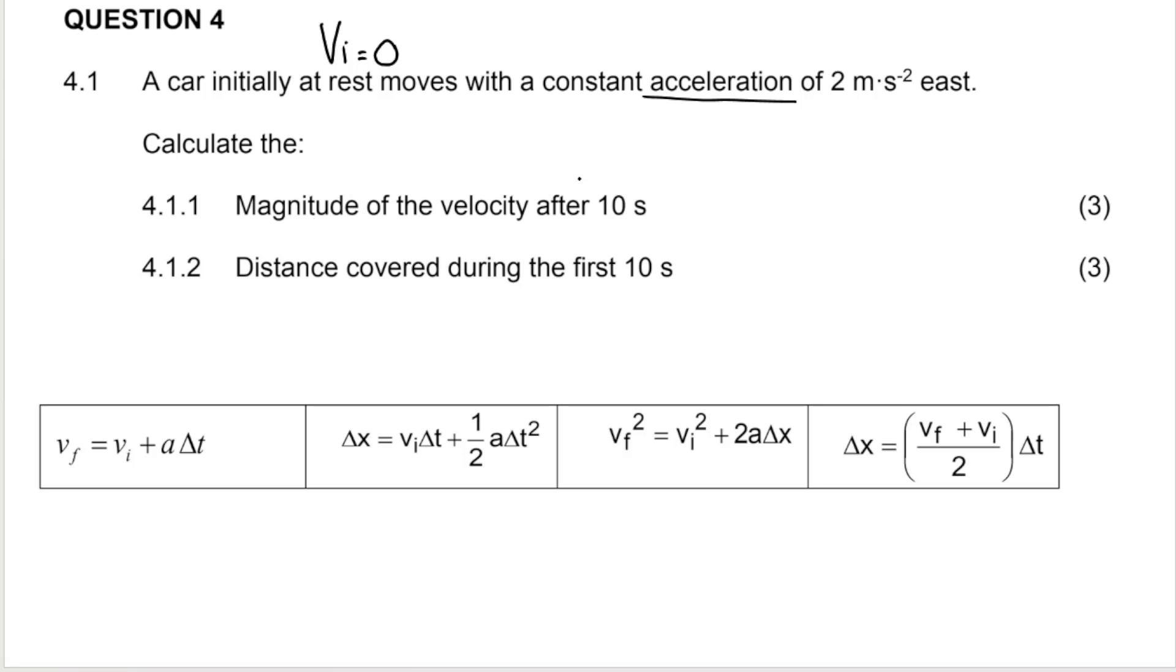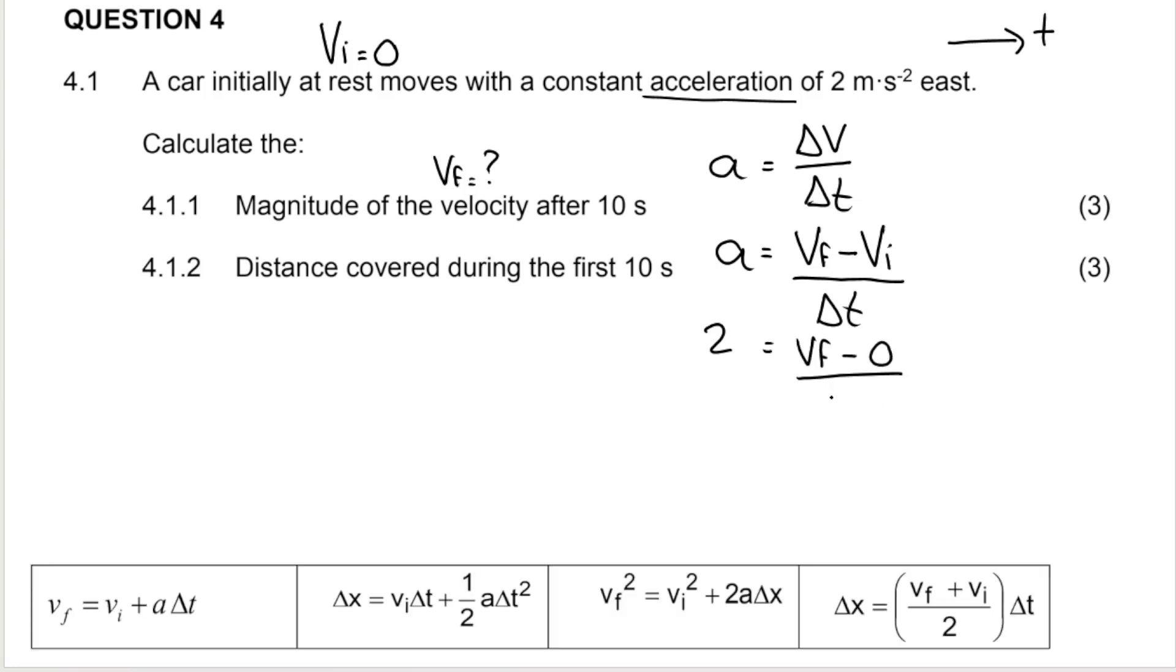So to calculate the magnitude of the velocity after 10 seconds, we're essentially looking for the final velocity. Now what we can do is because they give me acceleration and I'm looking for final velocity, I have initial, I've got time. I can actually also use this formula. Acceleration is equal to change in velocity over change in time. As you know, change is final minus initial divided by time. And then we substitute in. So acceleration is 2. Let's say east. Let's choose east as our positive direction. So positive 2. Final velocity is what I'm looking for. Initial velocity is 0. Initial velocity is 0. And my time is 10 seconds. So how you would do this is you're dividing by 10 over here. You're dividing by 10. So you take the 10 over, you multiply by 10. So 2 times 10 is 20.